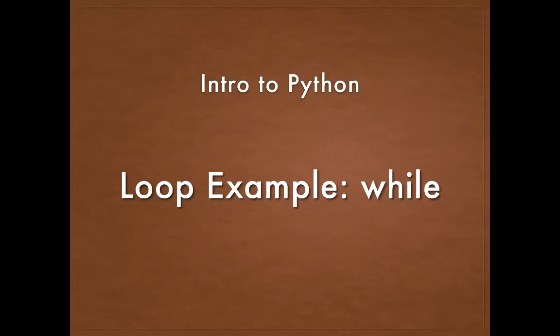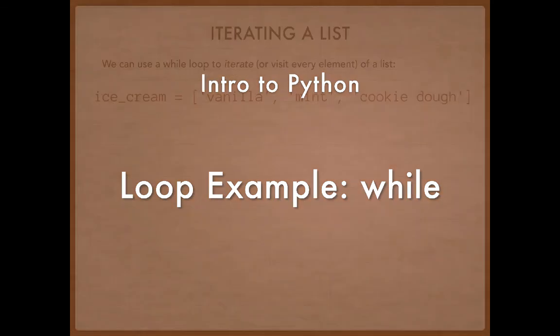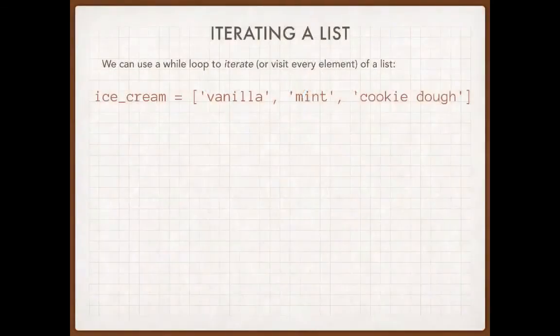In this video, I'd like to go through a very specific example of creating a while loop. In the last video, we talked about the three fundamental components that go into every loop, and here what I'd like to do is take advantage of those and write some concrete code so that you can see what's happening.